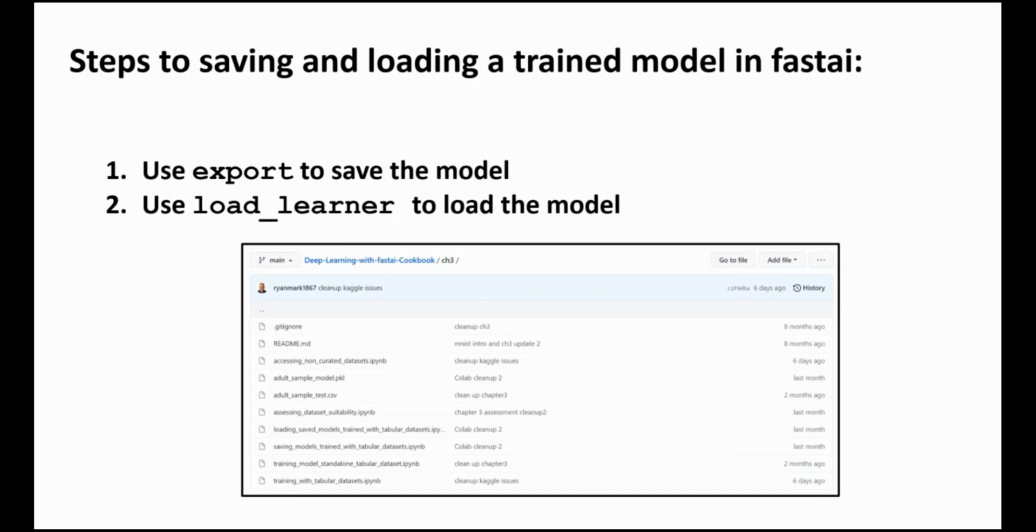You'll find the files we'll be looking at in the repo for this book. First we'll look at two notebooks in the CH3 directory of the repo: the saving models trained with Tabular Datasets Notebook and then the loading saved models trained with Tabular Datasets Notebook. Now let's look at the models in more detail.